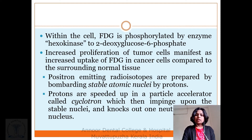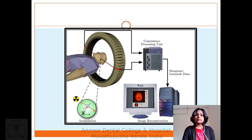Positron-emitting radioisotopes are prepared by bombarding stable atomic nuclei with protons. Protons are accelerated in a particle accelerator called a cyclotron, which then impinges upon stable nuclei and knocks out neutrons from the nucleus.